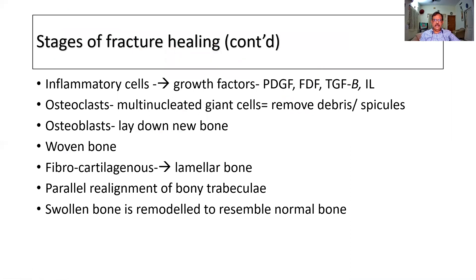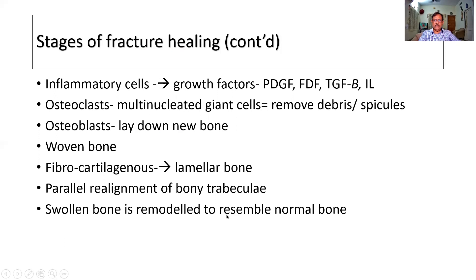As a continuation, there are inflammatory cells which produce a number of growth factors — platelet-derived growth factors, fibroblast-derived growth factors, TGF-beta, interleukin, etc. Osteoclasts are multinucleated giant cells whose business is to remove all unwanted debris — the spicules, the dead bone and tissue. Whereas osteoblasts lay down new bone. Osteoclasts remove; osteoblasts lay down. Initially you get what is called woven bone. Later, the fibrocartilaginous tissue is converted into lamellar bone, with a parallel realignment of the bony trabeculae. Finally, there is a remodeling of the bone.